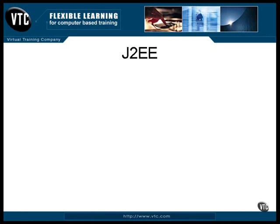J2EE stands for the Java 2 Enterprise Edition. It's not the compiler, although that is part of the download, but instead it's a collection of classes and utilities that you can use to write Java programs that run in and around a server. J2EE has been developed primarily as a builder of utilities for the server side of the internet link.